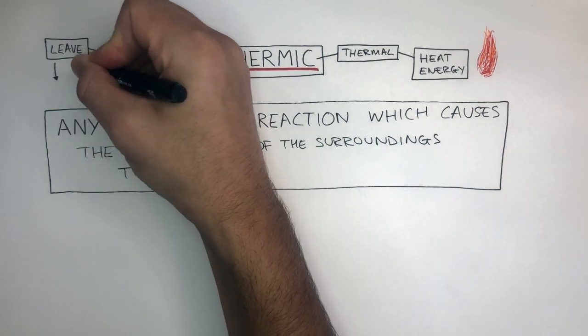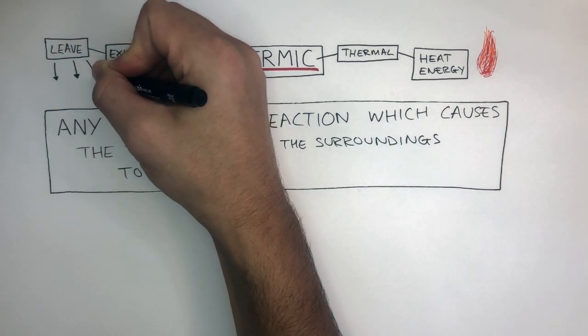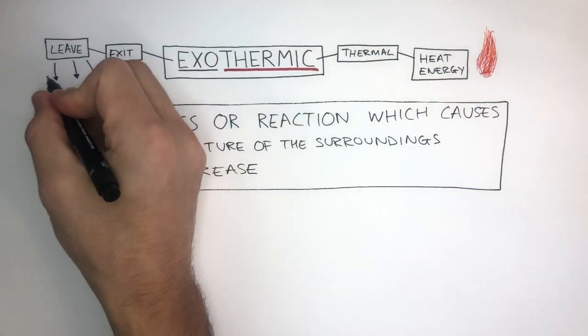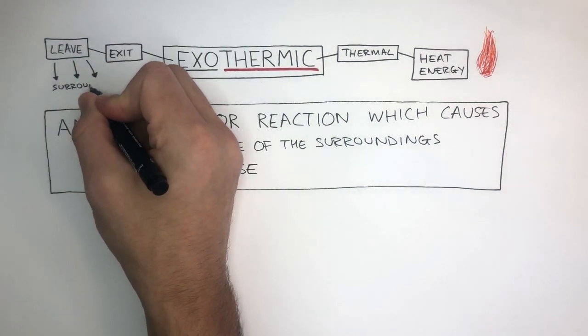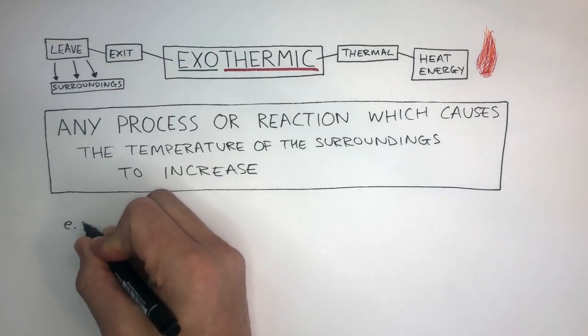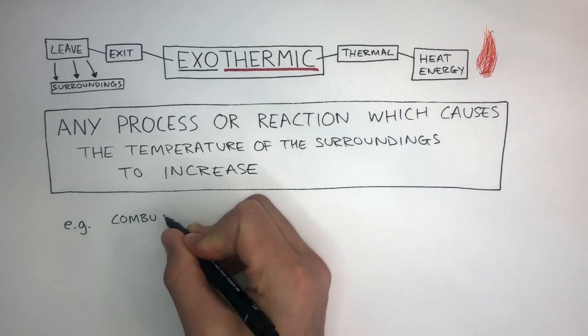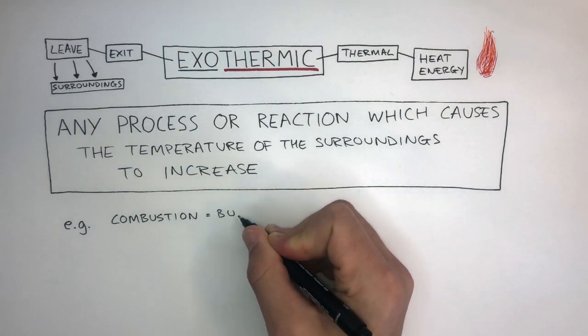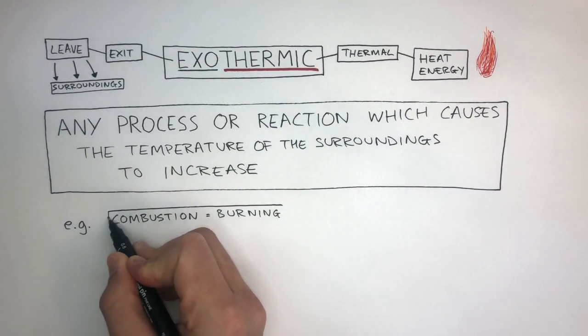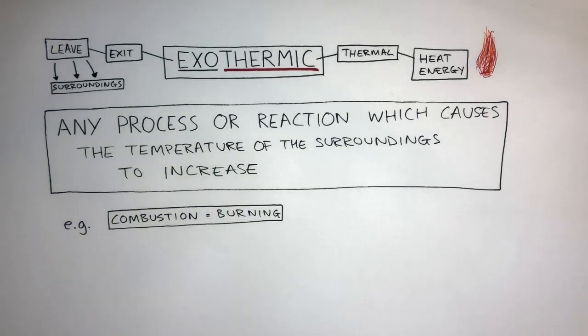These lines represent heat energy going into the surroundings. For example, combustion, also known as burning, is an exothermic reaction.